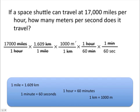Now looking at the units we're left with, we have meters on the top and seconds on the bottom, which is what our question is asking us for. So to finish solving our problem, we take 17,000 and multiply by all of our numerical values on the top, then divide by all of our numerical values on the bottom. We come up with an answer of 7.6 times 10 to the third meters per second.